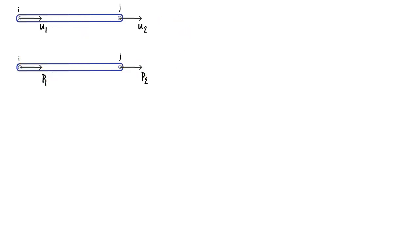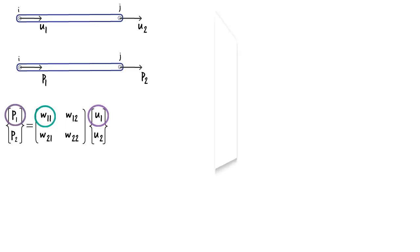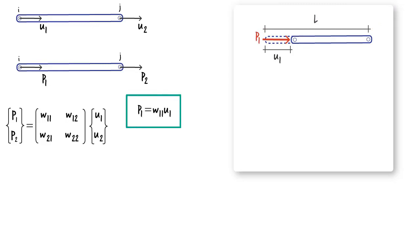Like before, the relationship between displacement U and force P can be expressed in matrix form. From the previous lecture, we can recall that W11 is the stiffness coefficient for the force-displacement pair P1-U1. This means, if the bar is displaced axially by distance U1 while U2 is zero, an axial force of P1 results. This force equals U1 times W11.